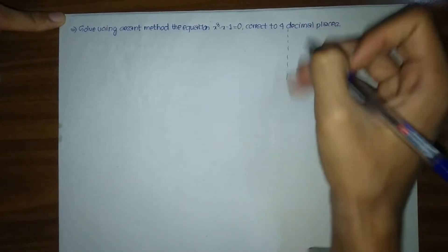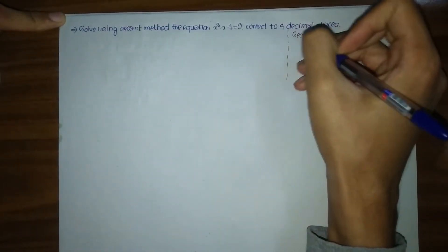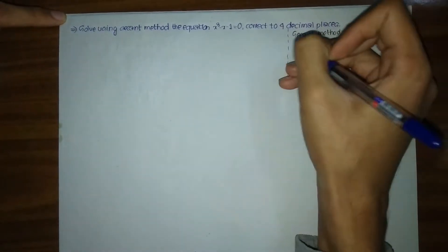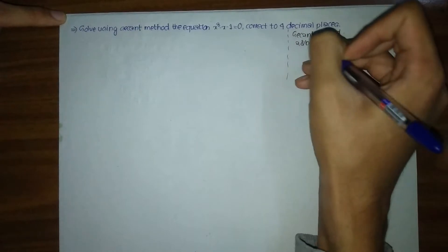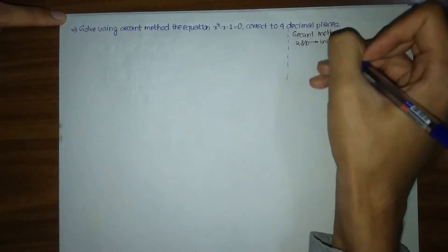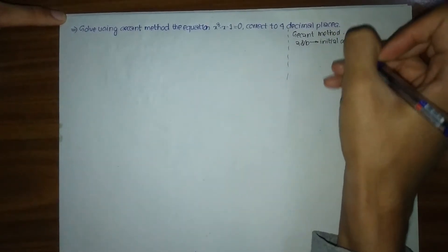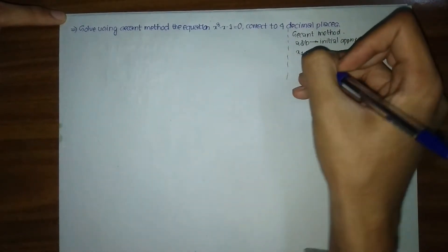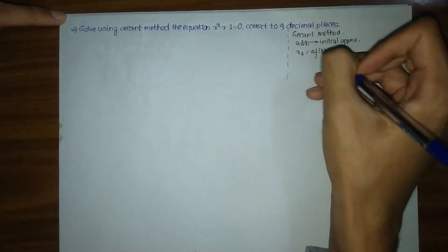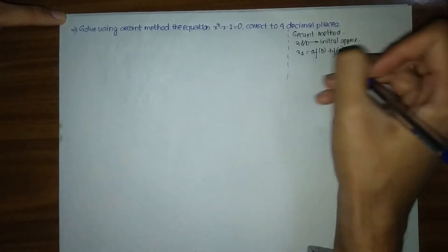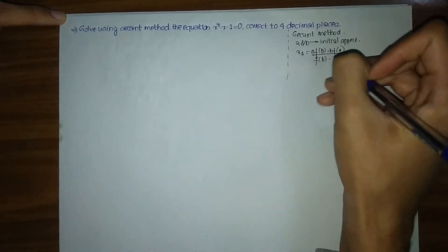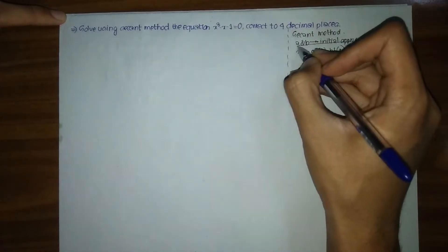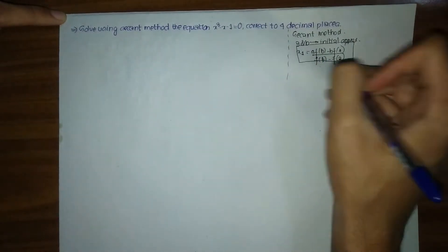So what is the second method? For the second method we have two initial approximations A and B. Our first approximation x1 is simply given by A·F(B) minus B·F(A) divided by F(B) minus F(A). As you can see, we have used the same formula to find our approximation as in the false position method.